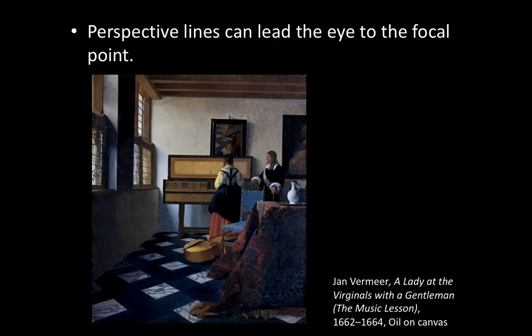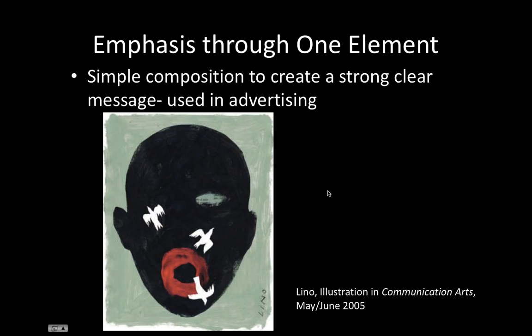Another thing that can create emphasis is perspective lines or any leading lines — any lines in the image that bring your eye back. Here, the whole edge of the wall brings your eye to this woman. It's a really great example of how the emphasis is not right in our face — we don't notice it right away until we start looking and realize she is the emphasis. Everything — these lines, his gesture pointing at her — brings us there. It's subtle; emphasis doesn't always have to be really pronounced.